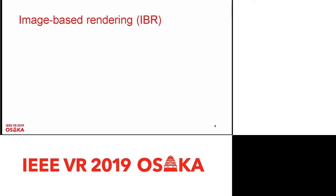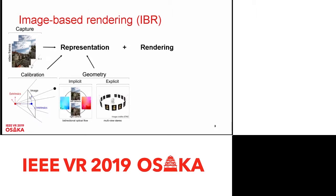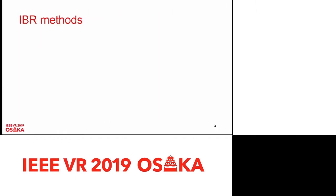Since our method is based on IBR, I want to give a rough overview of what I mean by this. Every IBR method has a representation and a rendering step. The representation contains images you capture casually, and you need to know how and from where these images were captured. Optionally, you can establish geometric relations among these images — either implicit in terms of optical flow or explicit in terms of global scene geometry. The rendering itself can always be boiled down to ray reconstruction: for every individual camera ray of the desired viewpoint, you want to reconstruct the color traveling along that ray.